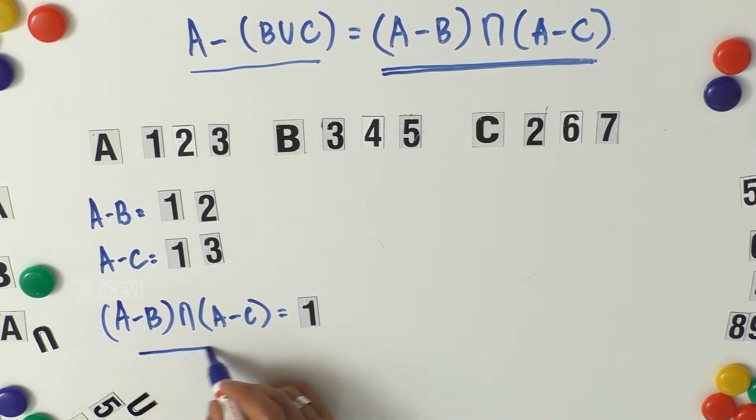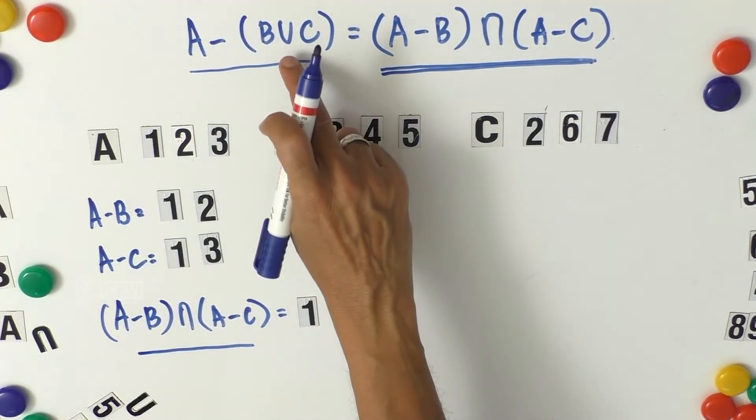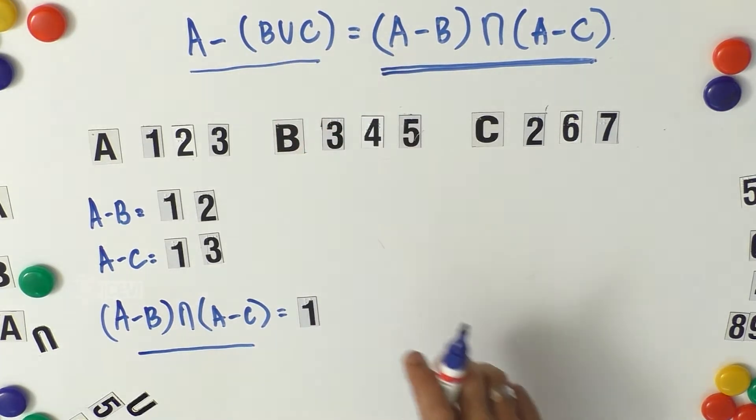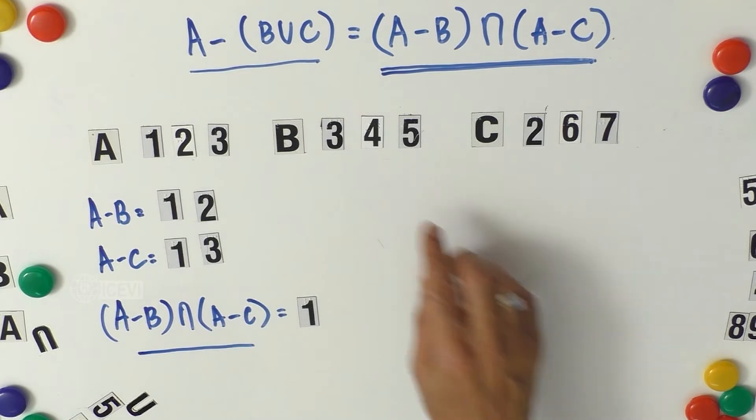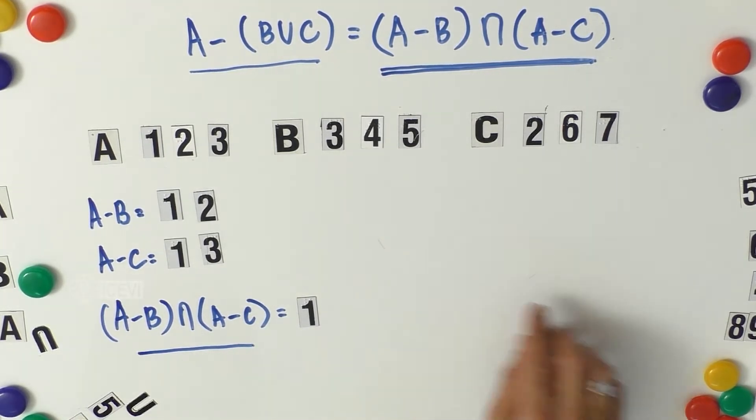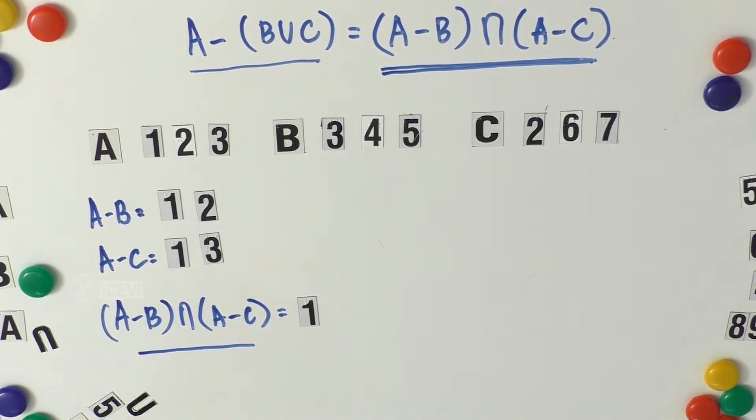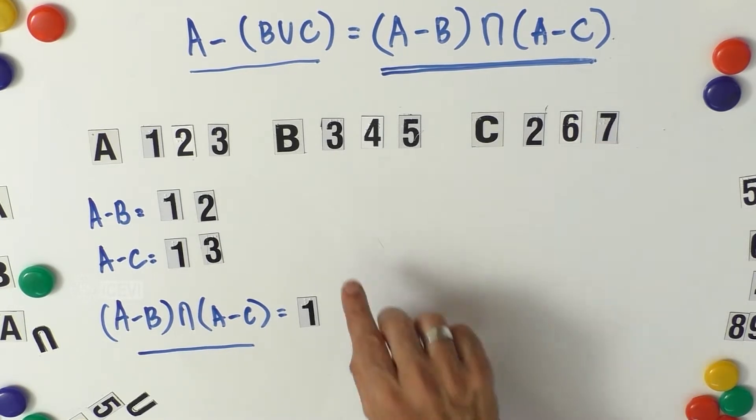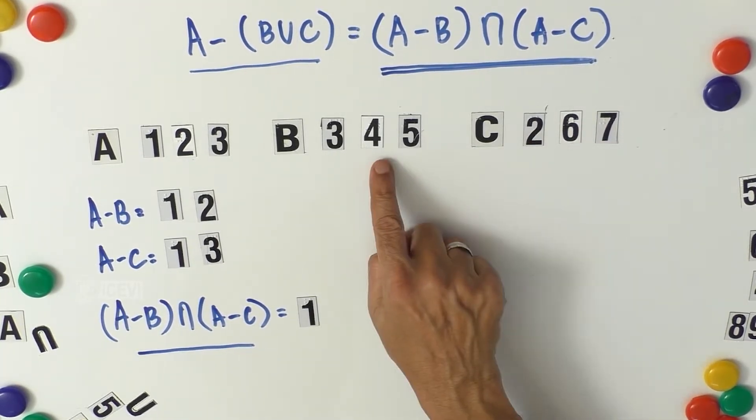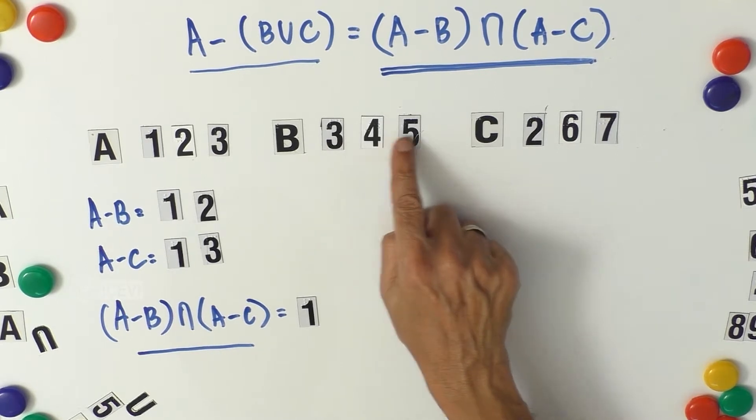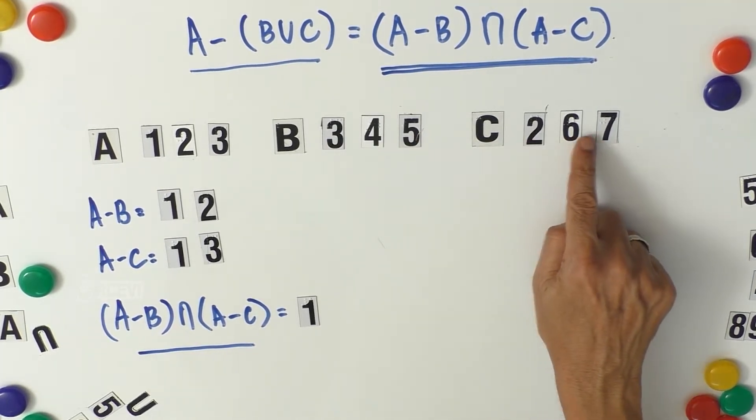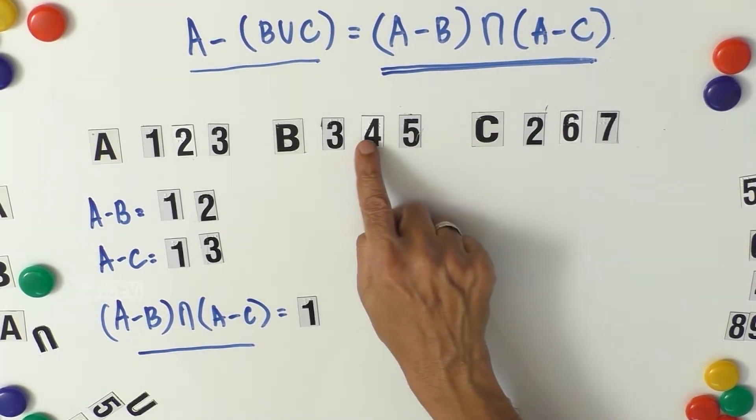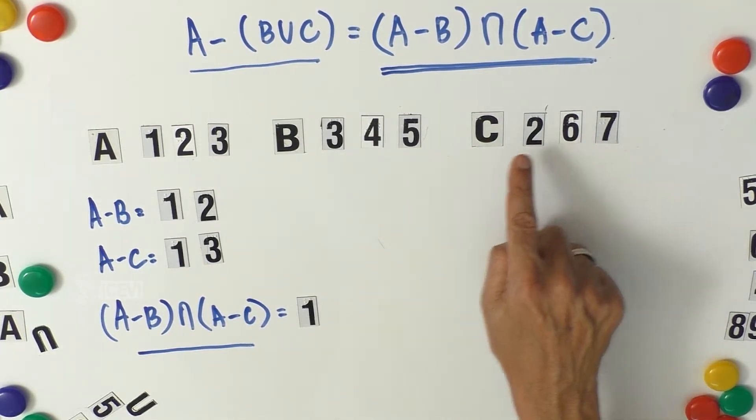So we have only 1 which is the intersection value. Now we have found out three values. Now we have to go for B union C. What is B union C? B union C is nothing but the collection of distinct objects of set B and set C. Now what are the distinct objects here? 3, 4, 5, 2, 6, 7.